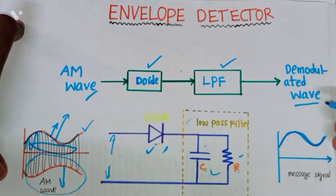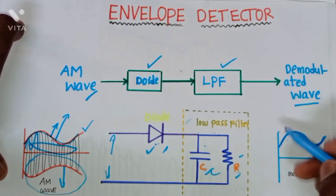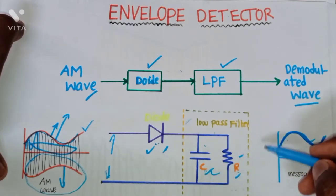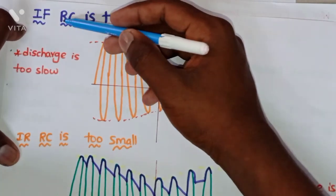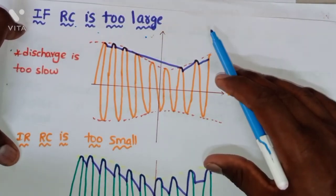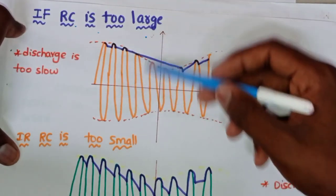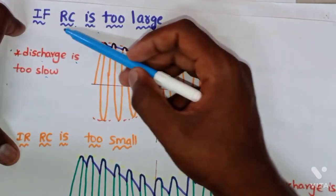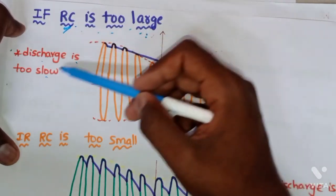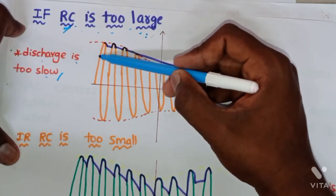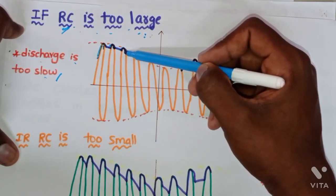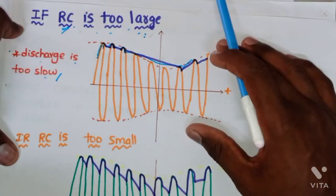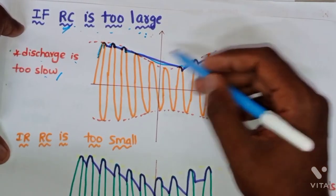The demodulated wave's time period and amplitude depend on the RC components. If the RC value is too large — meaning the time constant is too large — then the capacitor discharges very slowly. Observe here: the capacitor charges and discharges slowly, producing a smooth curve-shaped output.